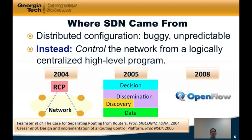Discovery basically allows the network control point to discover what resources are available. Dissemination basically talks about how to discover the network topology. On top of that, we have the logic that actually controls the behavior of the network — the decision plane — which is essentially conceptually like an RCP.